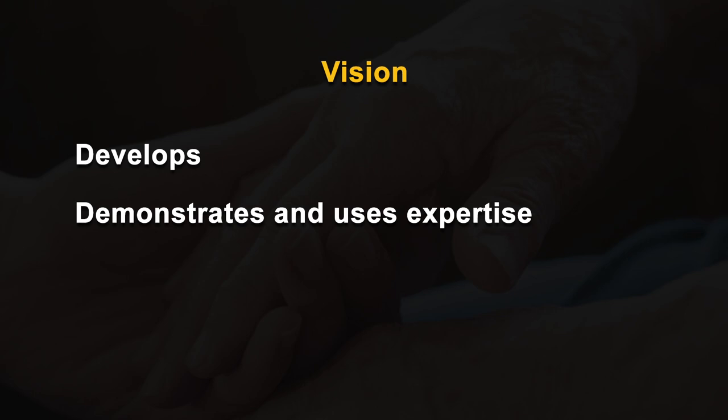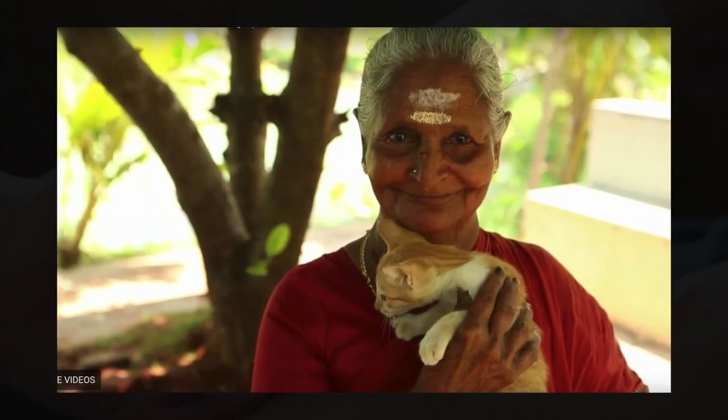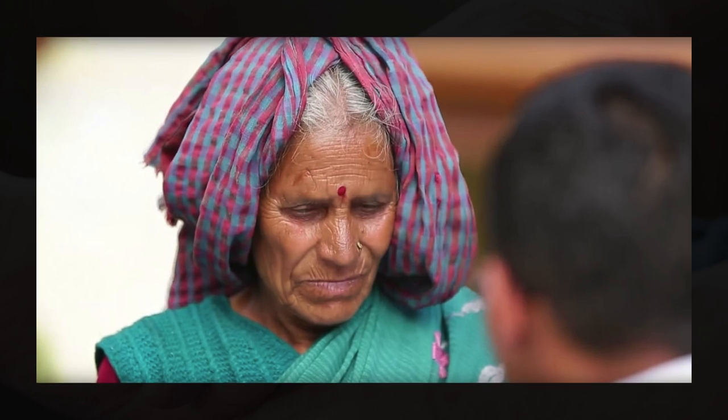Mission: The mission of HelpAge India is to work for the cause and care of disadvantaged older persons and to improve their quality of life. Vision: HelpAge India develops, demonstrates and uses expertise, experience and resources to animate the stakeholders, including older persons, to fulfill the needs of 1 crore disadvantaged older persons comprehensively across the country — of these, 2 lakhs would be covered directly and 8 lakhs indirectly through partners. During this process, HelpAge India transforms itself into a predominantly rights-based organization, organizing elders and building movements to demand and exercise their rights and entitlements.